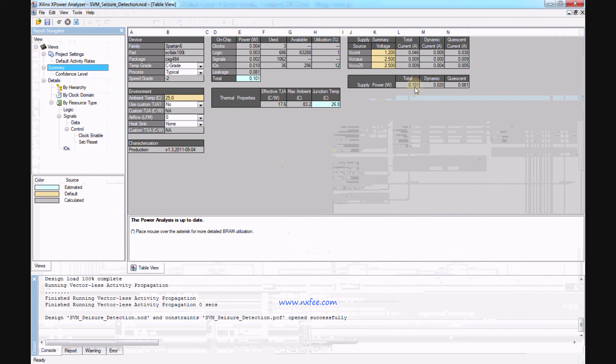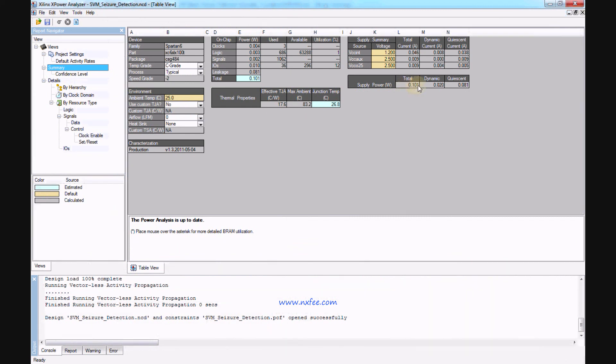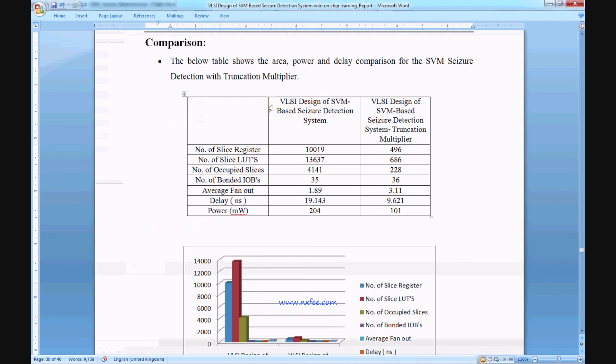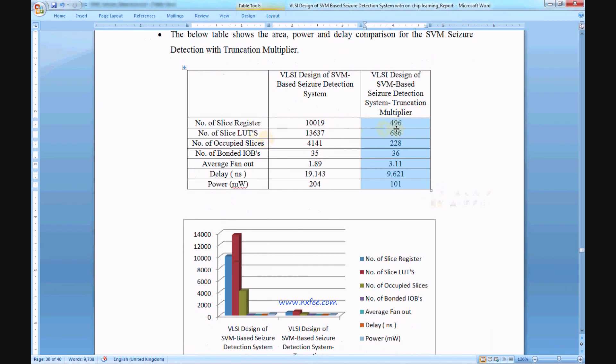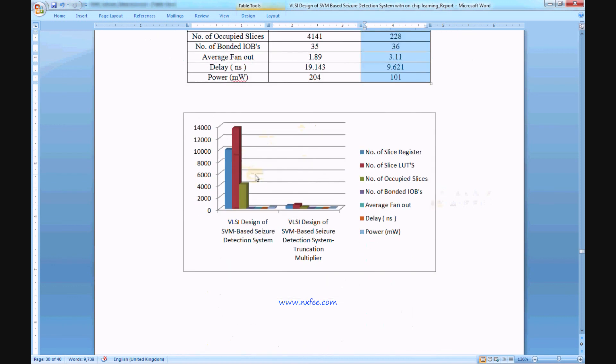This is the power report. The architecture takes 100 millivolts of power. Finally, the comparison shows existing and proposed work. The existing work did not use truncation multiplier; the proposed work uses truncation multiplier. With this method, the area size is reduced. Overall, slice registers, LUTs, occupied slices, IOBs, and delays are all reduced.